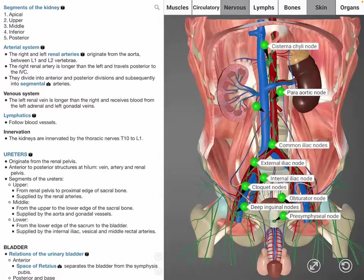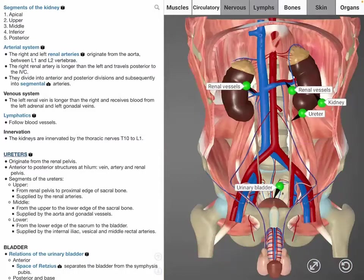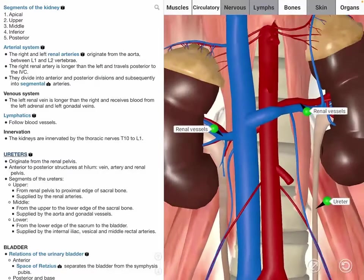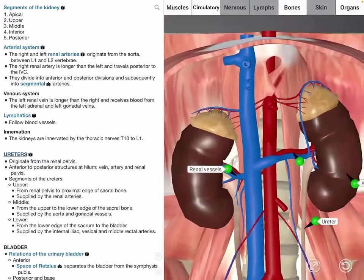Now we switch our focus from the kidneys to the ureters, which originate in the renal pelvis. The upper segment of the ureter from the renal pelvis to the proximal edge of the sacral bone is supplied by the renal arteries.